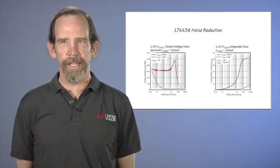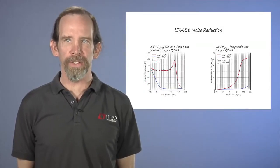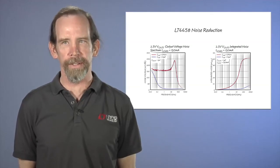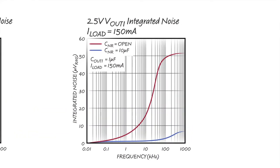You can also see the dramatic effect the noise reduction pin has on the total integrated noise for the same scenario. With no capacitor on the NR pin, the total integrated noise is over 50 microvolts RMS. When there is a 10 microfarad capacitor on the noise reduction pin, this reduces to around 6 microvolts RMS total integrated noise. This can be further reduced by increasing the size of the capacitor on the noise reduction pin and the output pin.